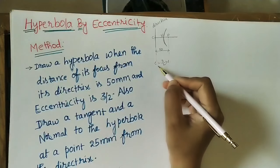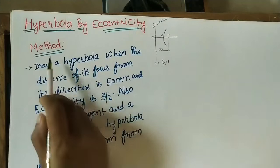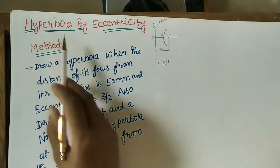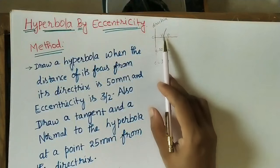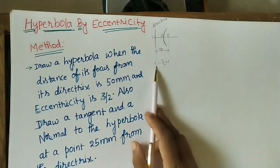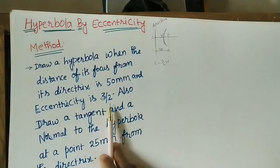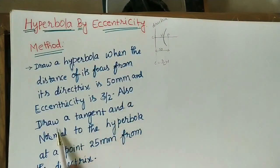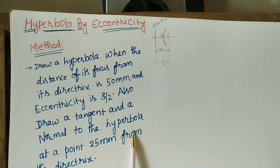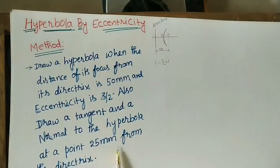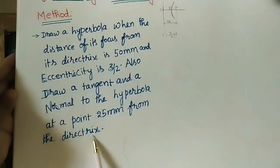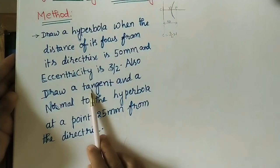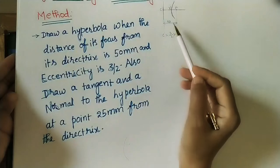If eccentricity is greater than 1, we get a hyperbola. If it is less than 1, we get an ellipse. Here the value is 3/2. Also, the question asks us to draw a tangent and a normal to the hyperbola at a point 25 mm from the directrix.